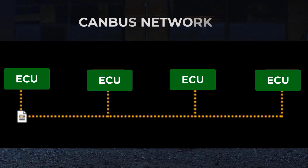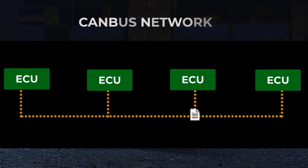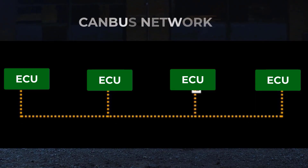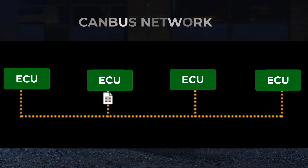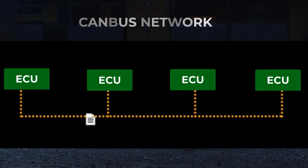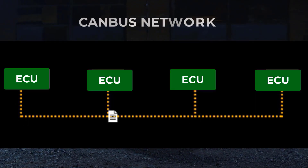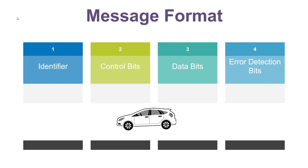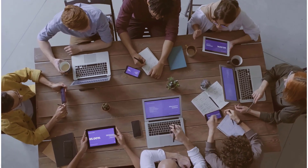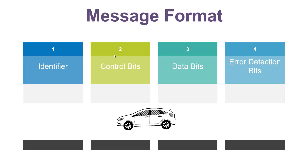CAN bus follows a peer-to-peer communication model where all connected components are equal — they can send or receive messages. Instead of a traditional master-slave setup, CAN bus uses a broadcast method, just like in the meeting where everyone is listening. When a component wants to send a message, it assembles the data into a frame and includes an identifier — just like a unique name in that meeting.